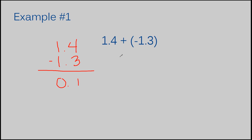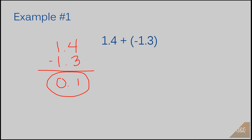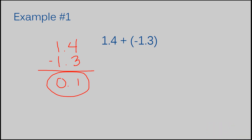We have to consider what sign this answer is going to be. The sign always becomes the same sign that the number with the largest absolute value originally had. In this case, the 1 and 4 tenths is positive — there's nothing in front of it — so my answer is also positive. The answer to example number 1 is 1 tenths. I used both skills: what I know for subtraction of decimals, and what I know for adding, subtracting, multiplying, and dividing integers to determine the sign.